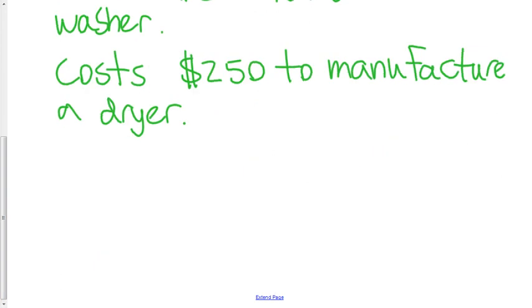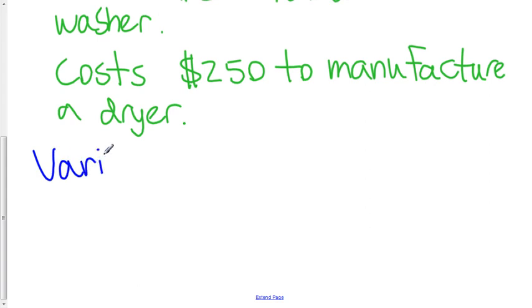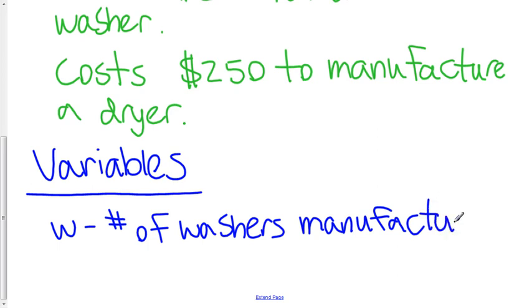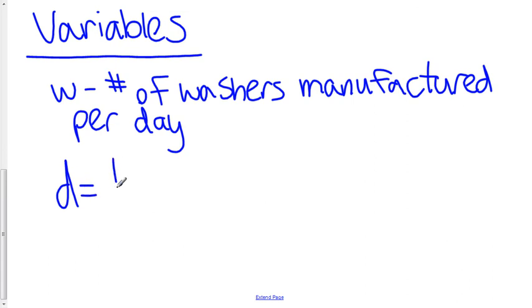The first thing you want to do is identify the variables. What are our variables? We have two variables. Let's call it W, and W would be the number of washers manufactured or produced per day.